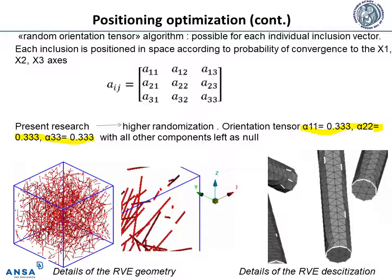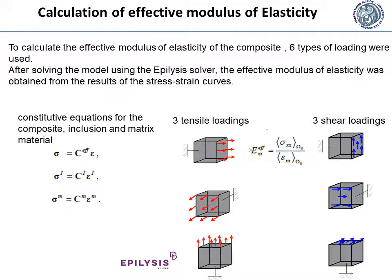In the left figure, the created microstructure geometry is seen, as displayed in the ANZLA software environment, for the case of the aforementioned tensor values. To calculate the effective modulus of elasticity of the composite, the microstructure undergoes six types of loading. For the analysis solution, the PLC solver was used. Each loading type enables the calculation of the effective properties in each direction, and this calculation was obtained from the averaged stress-strain tensors.